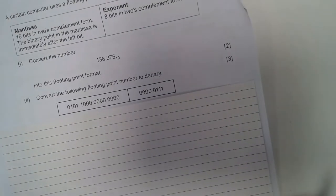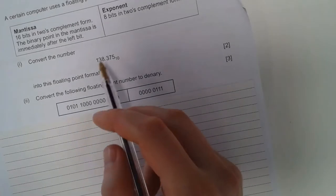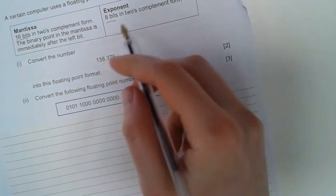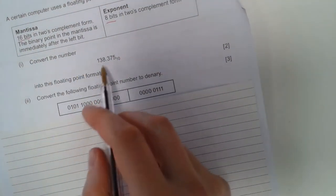So now we're looking at our next question. A certain computer uses a floating point representation. It's asking for 16 bits with 8 bits in 2's complement form, so convert this number.